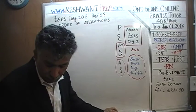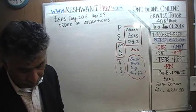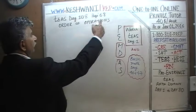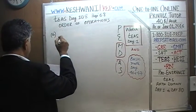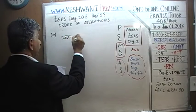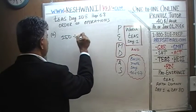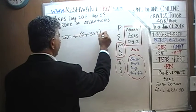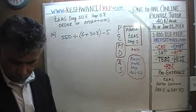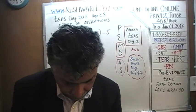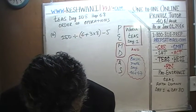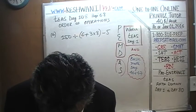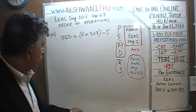Let's get going. We are going to pick up from where we left off yesterday. We did the first 5 examples on page number 68. We are going to pick up number 6. We are on page 68, number 6: 150 divided by 6 plus 3 times 8 minus 5.